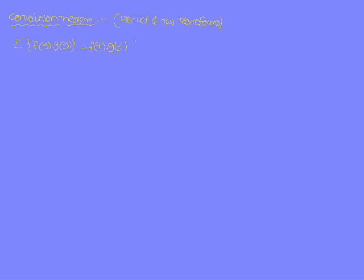We already know that f(t) * g(t) is nothing but the convolution integral: integral from 0 to t of f(u) × g(t − u) du. So the Convolution Theorem statement is: L inverse of f̄(s) × ḡ(s) equals f(t) * g(t), where the product f(t) * g(t) equals the integral from 0 to t of f(u) × g(t − u) du.